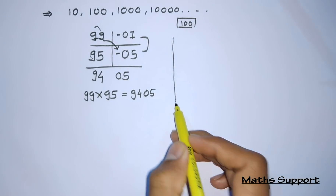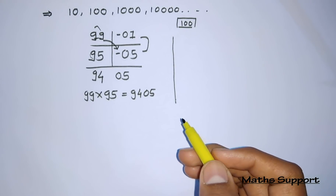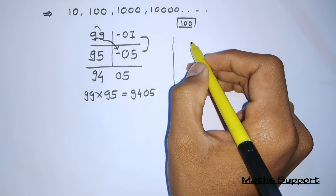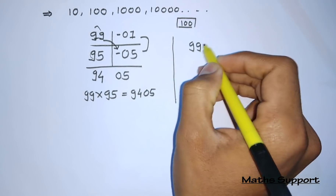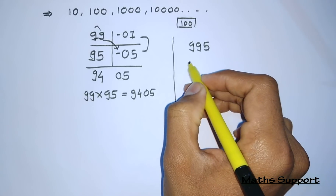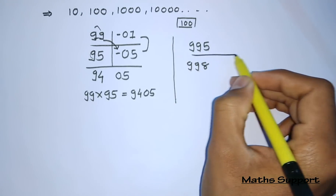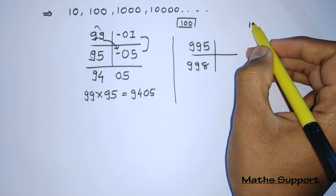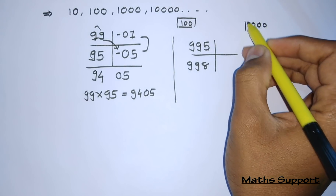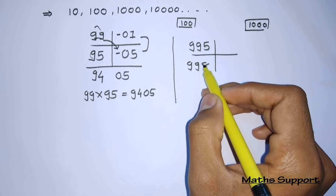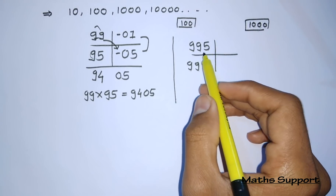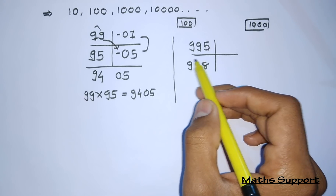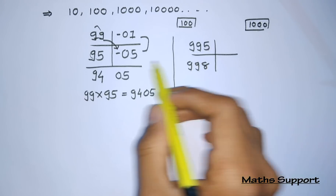Let's take another example. This time we are taking base 1000. Let's take the numbers 995 and 998. For multiplying these two numbers, we first take the base, which is 1000. Now find how far each number is from 1000. Keep in mind both numbers should have only one base — there should be no interaction between different bases.